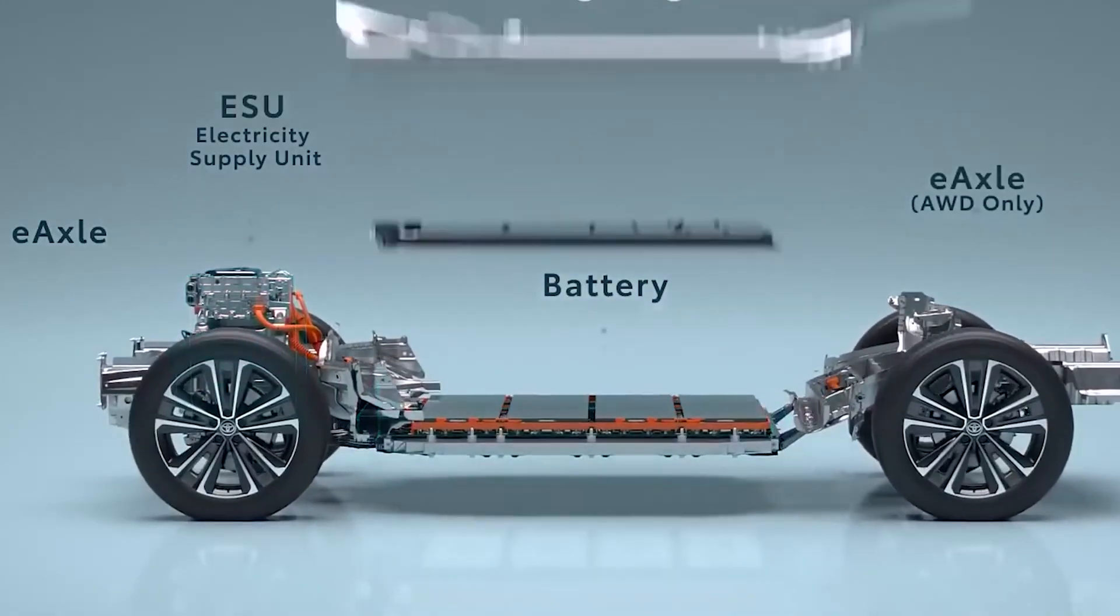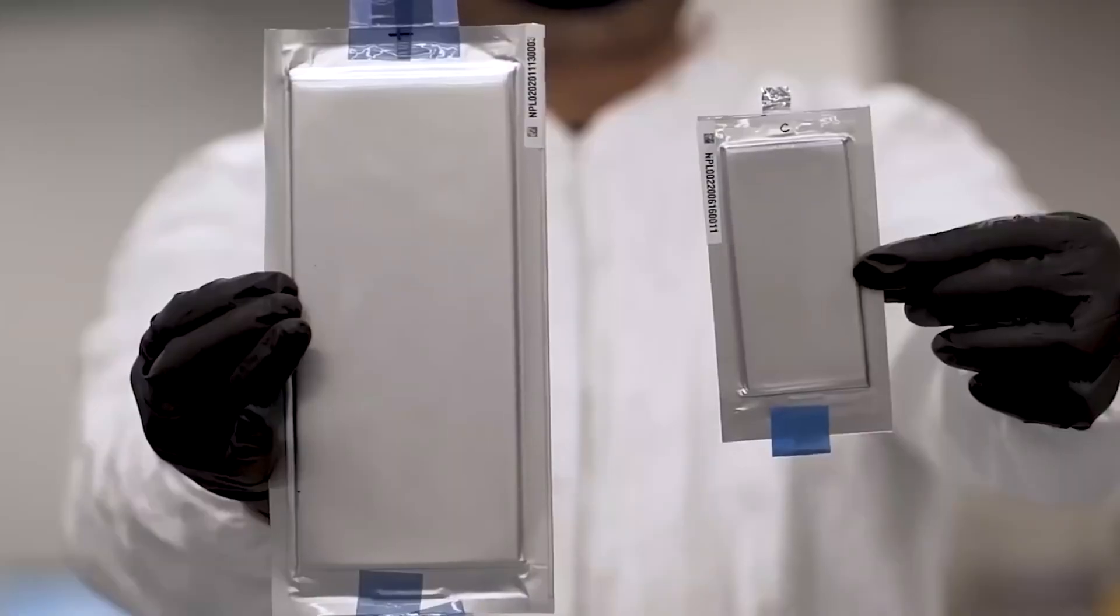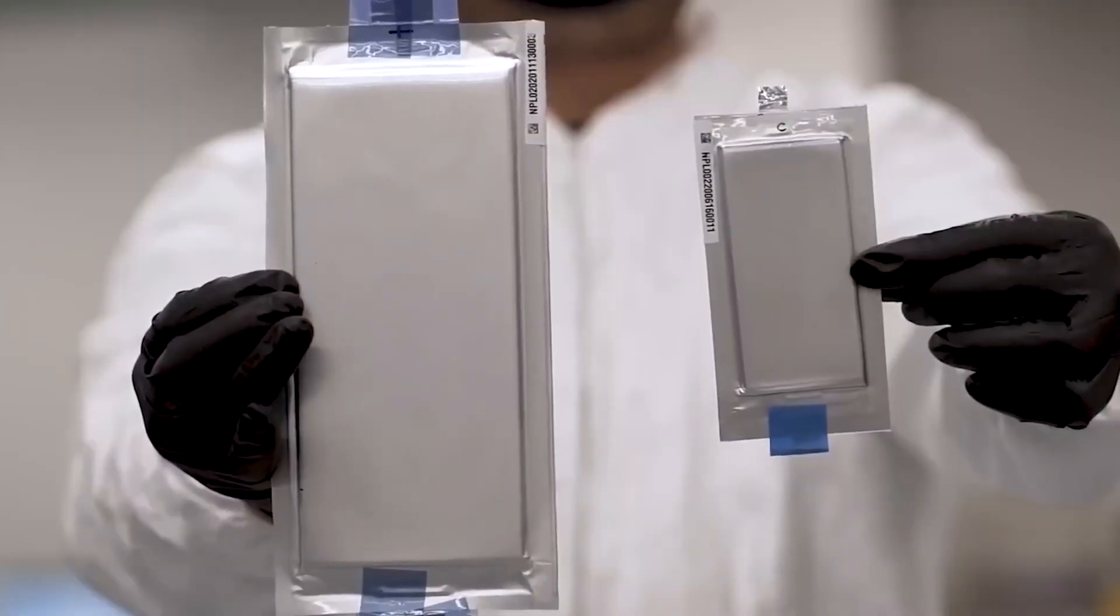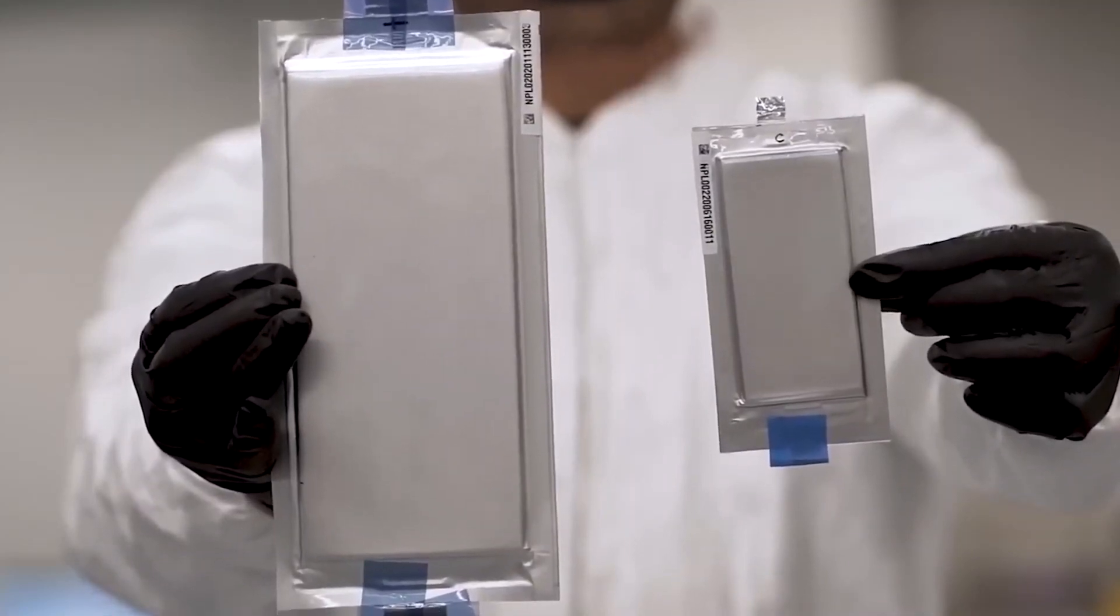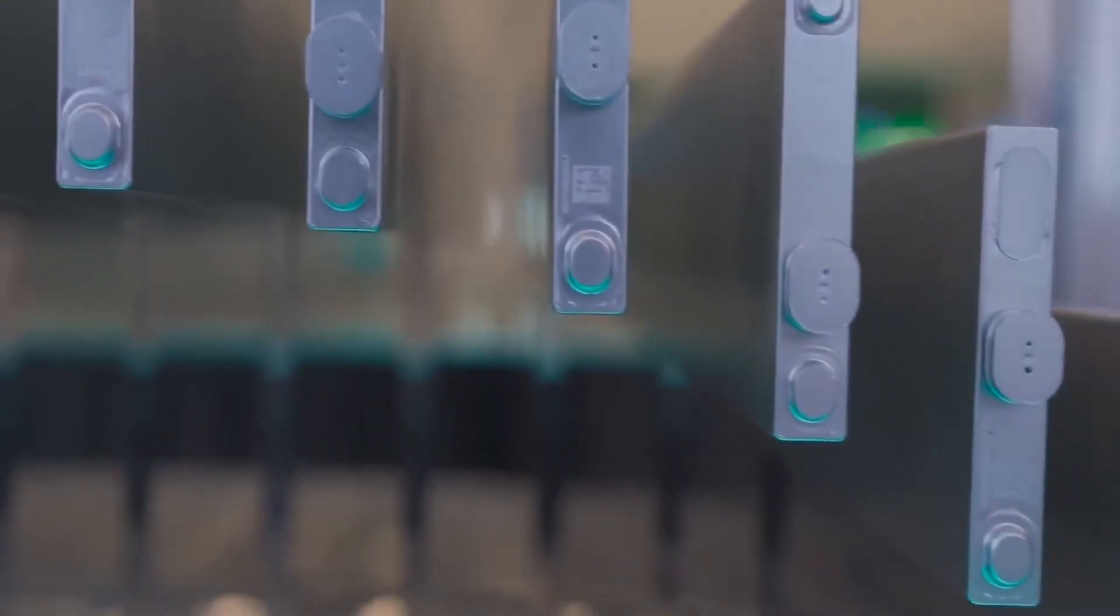Although still an improvement over existing cells, the liquid electrolyte increases the weight and volume of the cell, which limits the increase in cell energy and thus EV range. And let's get into more details.